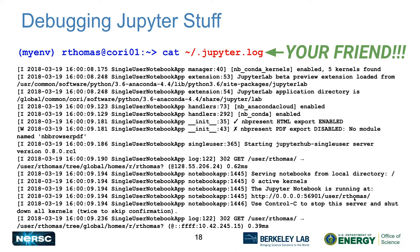The log file tells you what's going on with your Jupyter notebook while it's running. If there's a problem, you'll usually see a traceback — for example, if you mess up the JSON in your kernel spec, you'll see a JSON parsing error. So before filing a ticket, check `~/.jupyter.log` and see if there's anything you can do about it.